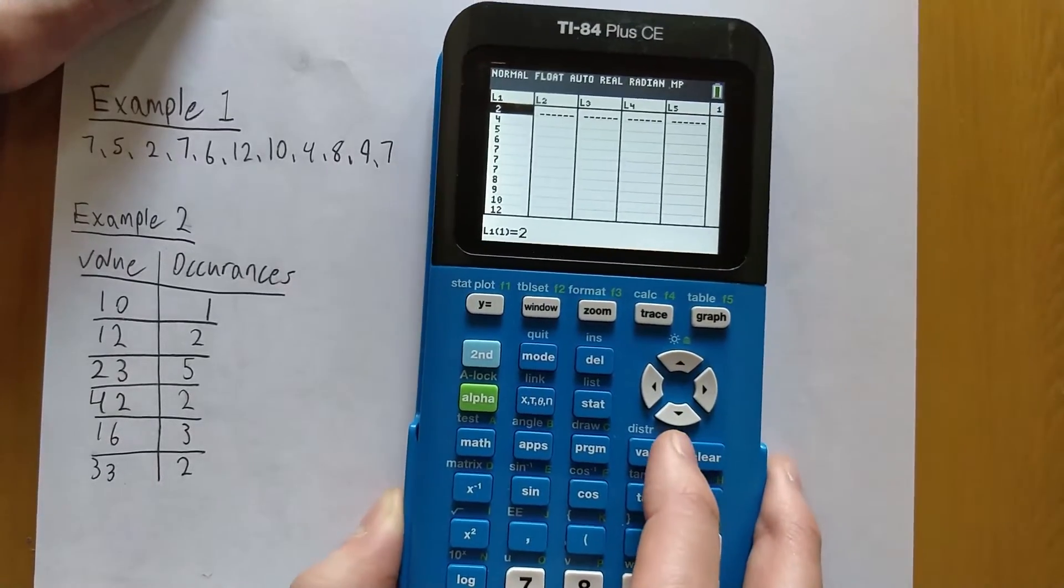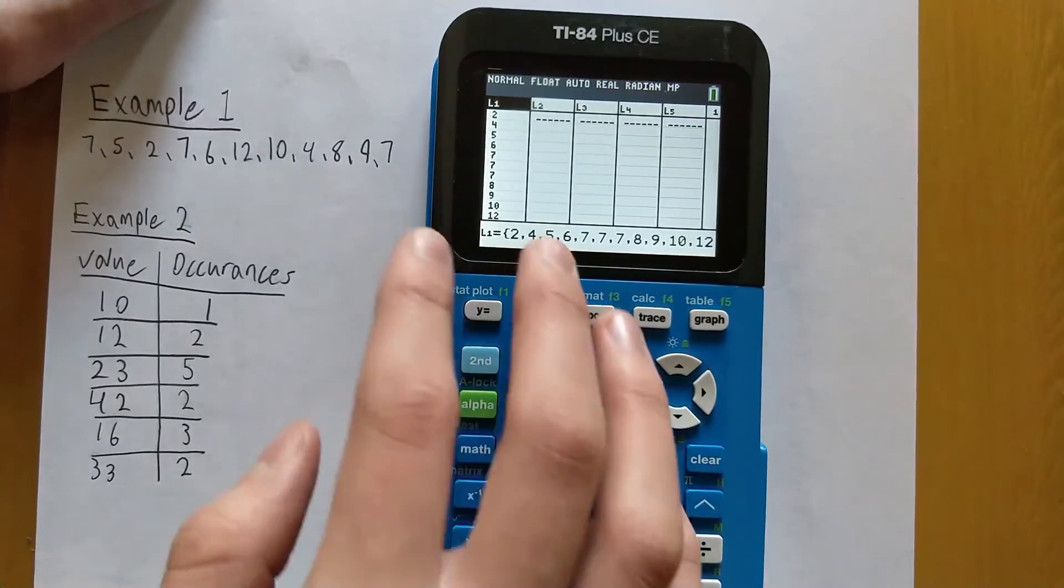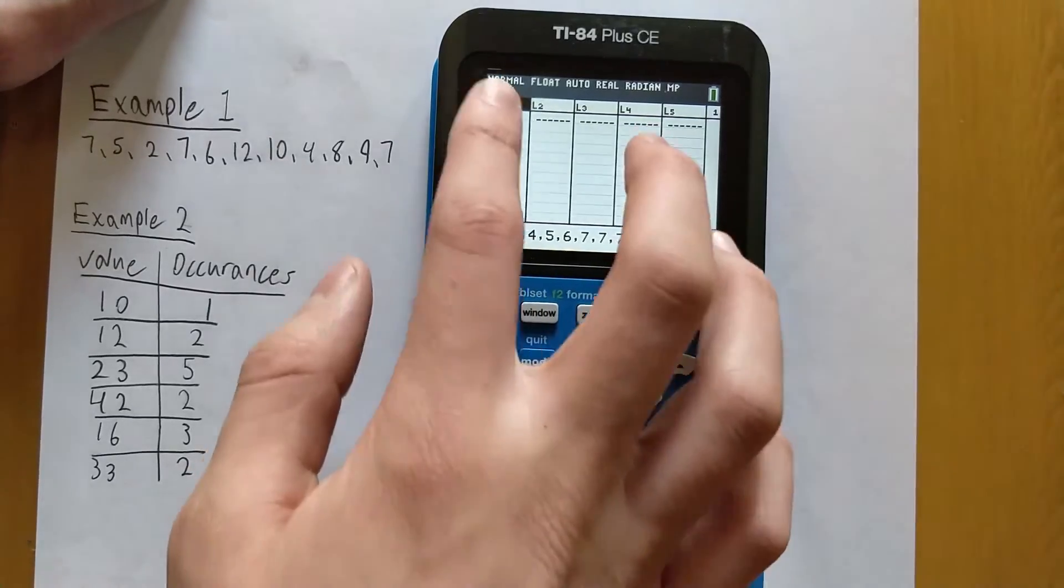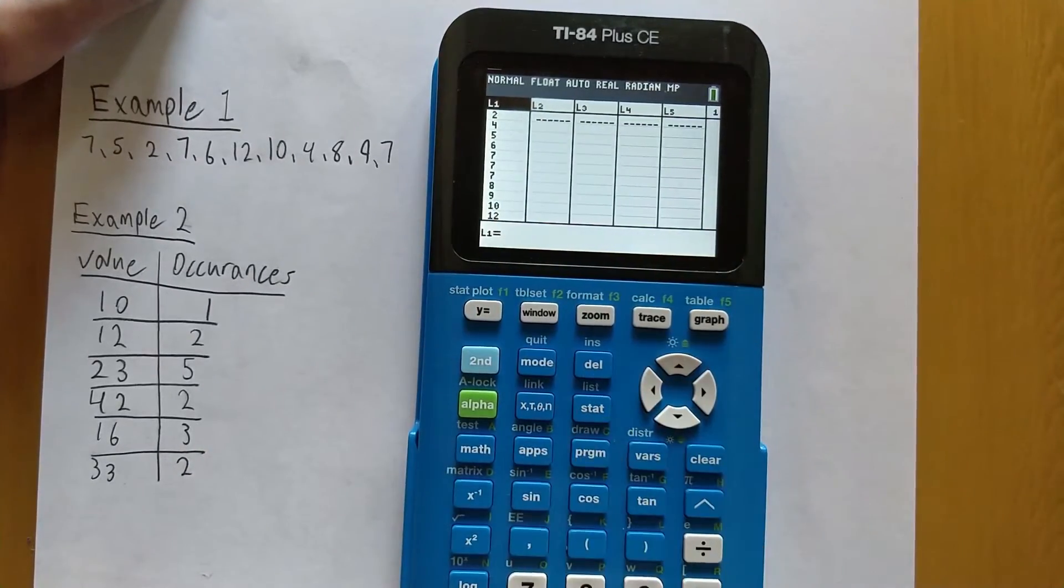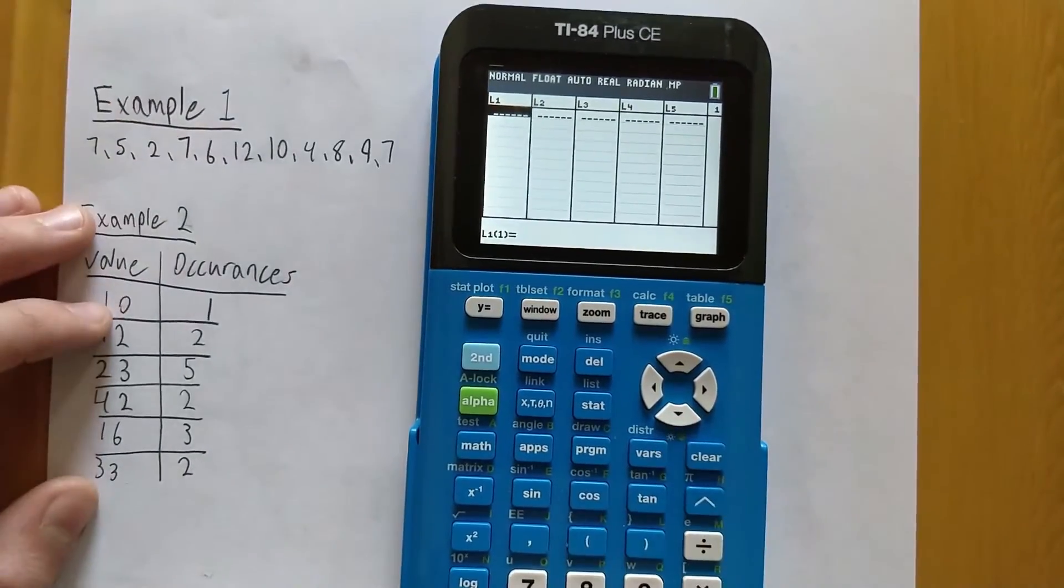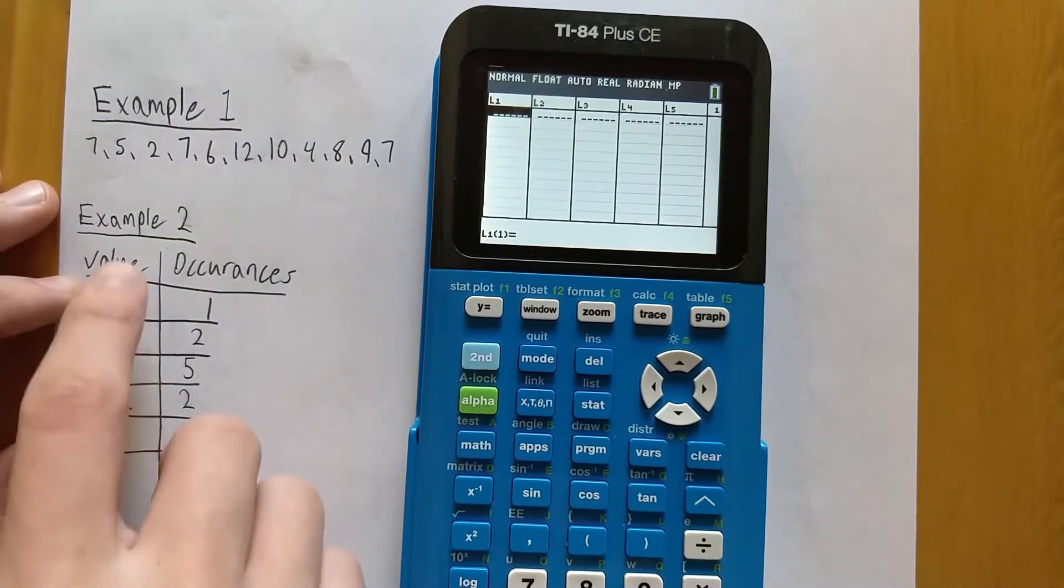Now let's just clear out L1 if you have anything typed there by going back up to the list name, pressing Clear and hitting Enter. So now let's just type in the values that we have in the first column into L1.